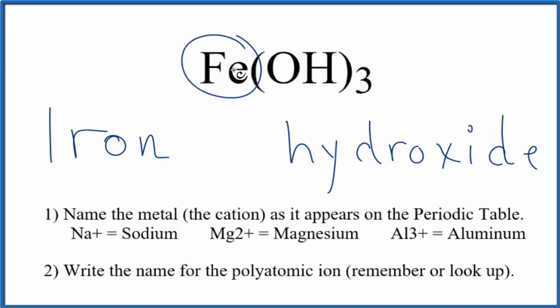But we said Fe, iron, that's a transition metal, and it can have a different ionic charge depending on what it's bonded to. Right now it's bonded to three hydroxide ions, and each hydroxide, the whole thing, is one minus.